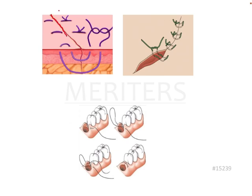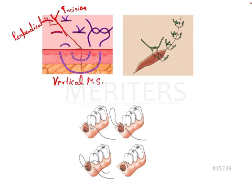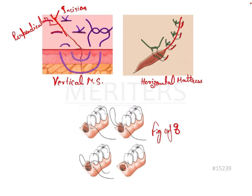Here, if you see this is the incision — when you see the incision and the orientation of the sutures is perpendicular to the incision, then we can conclude these are vertical mattress sutures. If the orientation of the threads is parallel to the direction of the incision, then these are horizontal mattress sutures. This particular figure shows the figure-of-8 suture, where you can always see one extracted socket — it is generally given after extraction to close the socket.